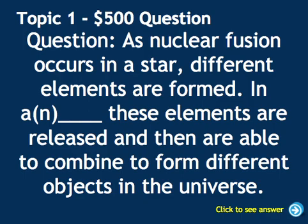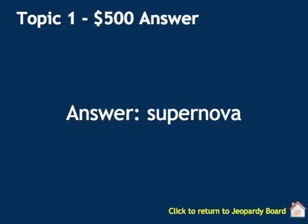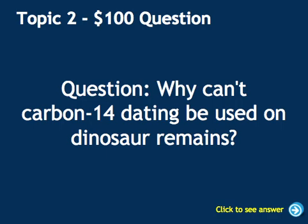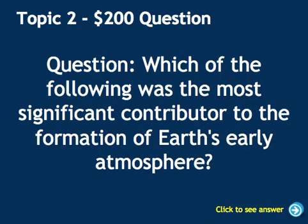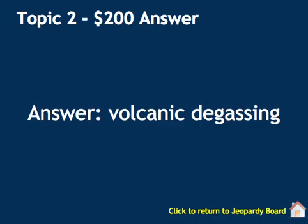As nuclear fusion occurs in a star, different elements are formed. In a blank, these elements are released and are able to combine to form different objects in the universe — the answer is supernova. Why can't carbon-14 be used to date dinosaur remains? Because carbon-14 dating is only accurate to 50,000 years ago and dinosaurs were gone way before that. Which of the following is the most significant contributor to the formation of Earth's early atmosphere? The answer is volcanic degassing.